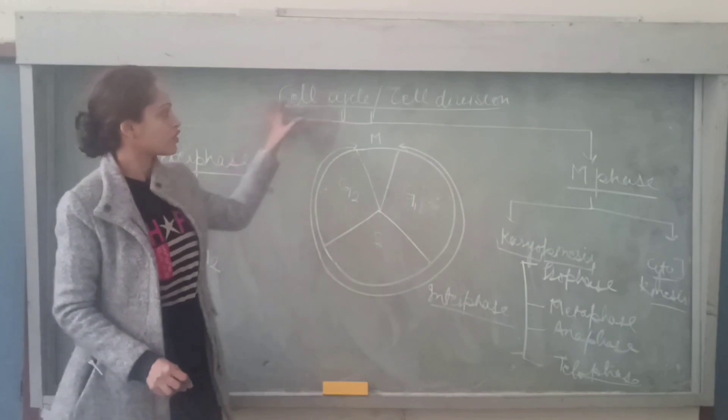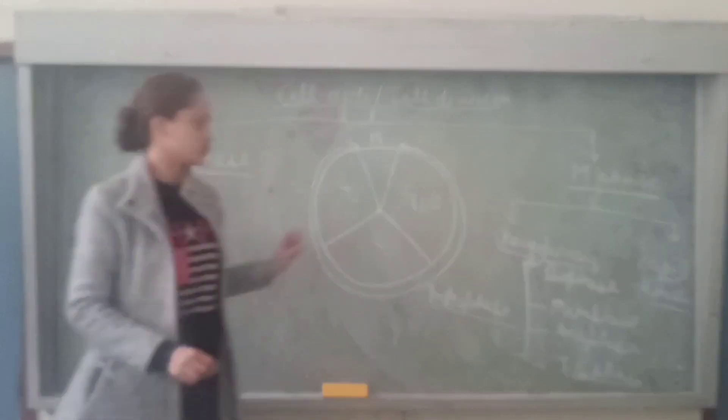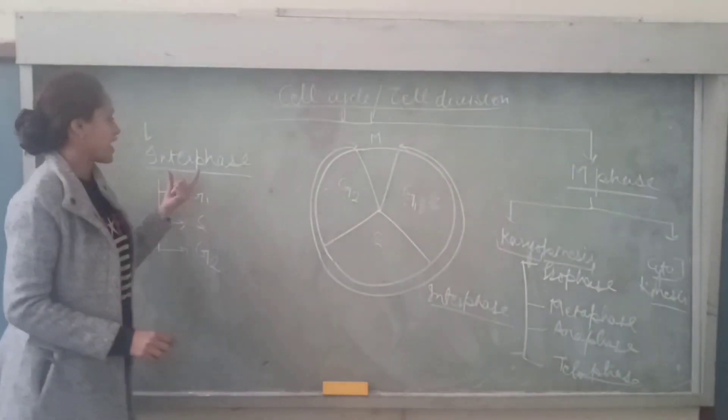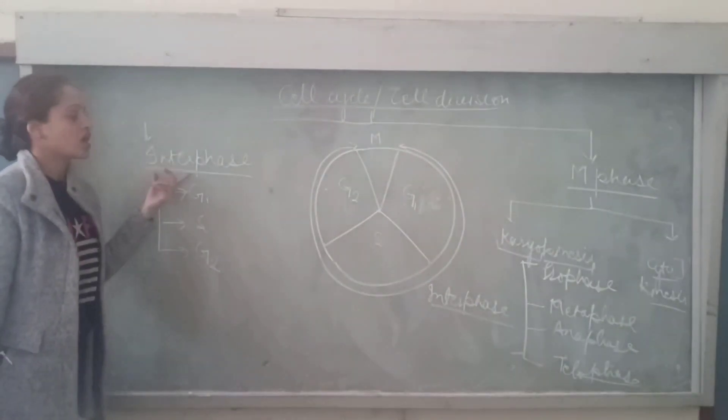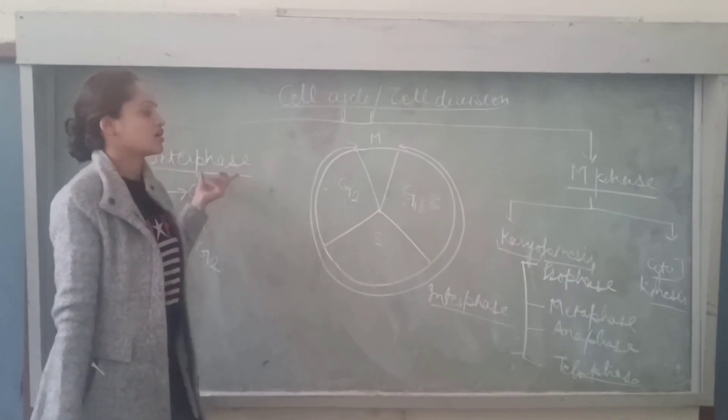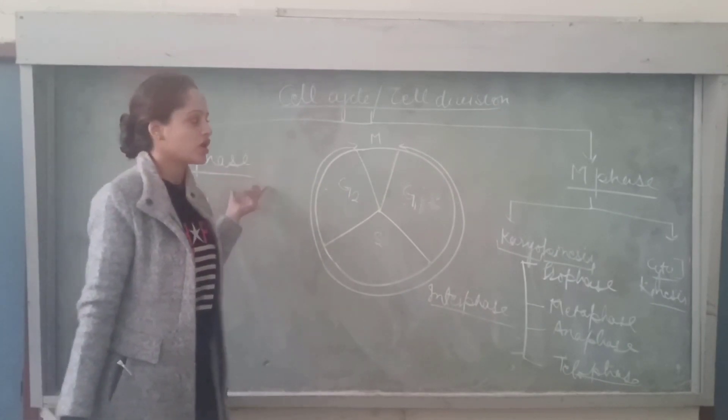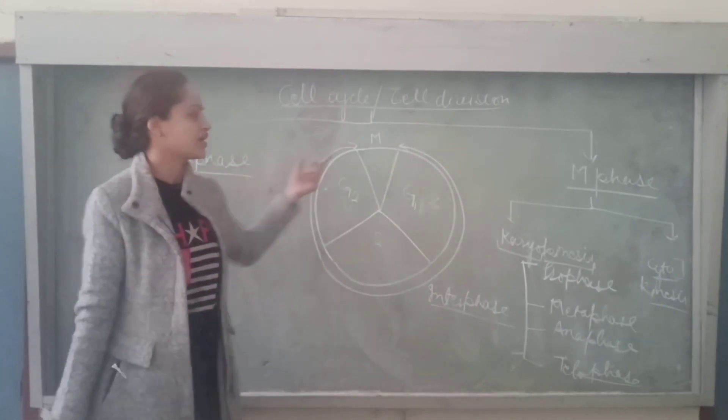So this is an overview about this cell cycle. Now we will describe interphase. So what happens in interphase? As I already told you, in interphase the cell will prepare itself for M phase, for cell division.